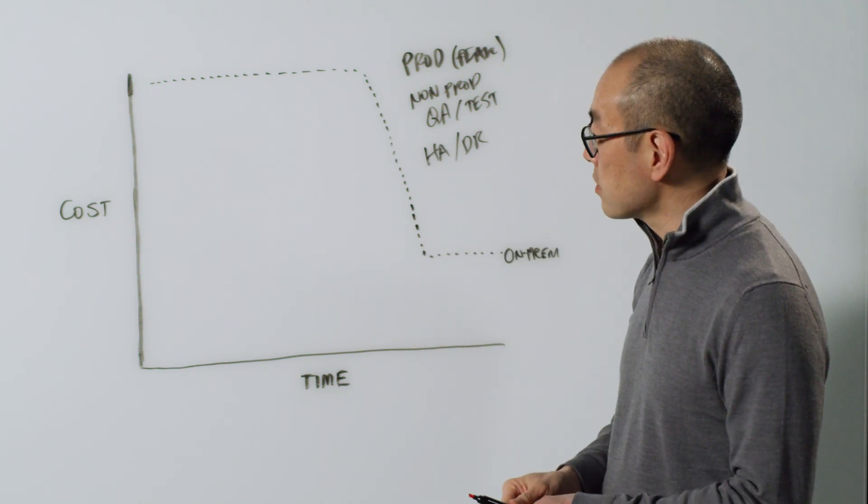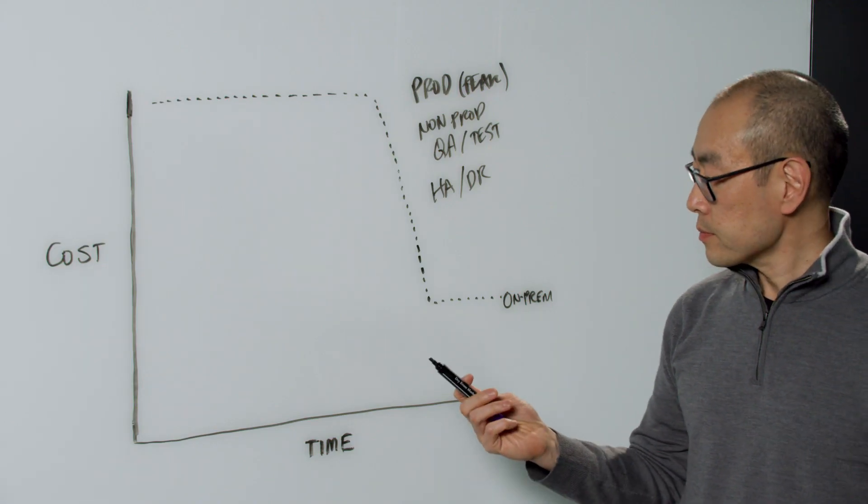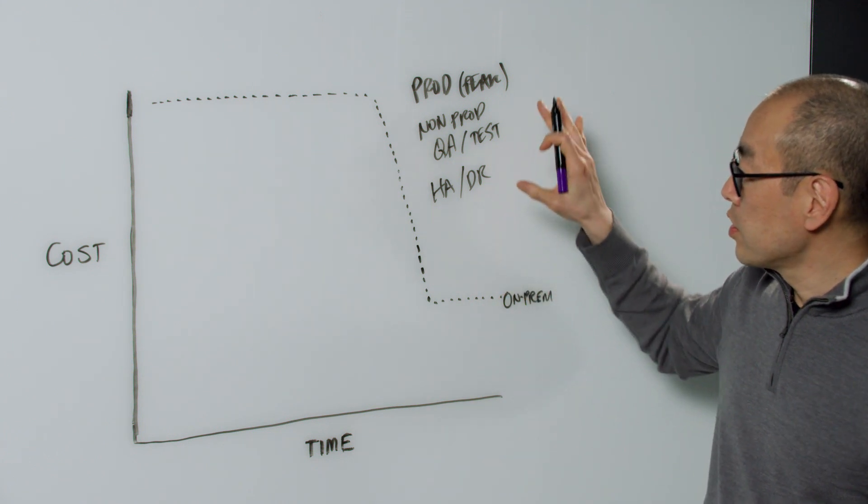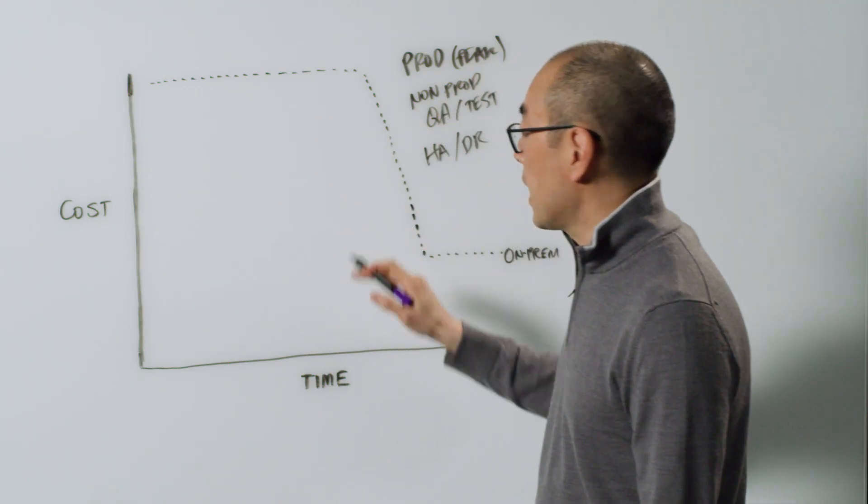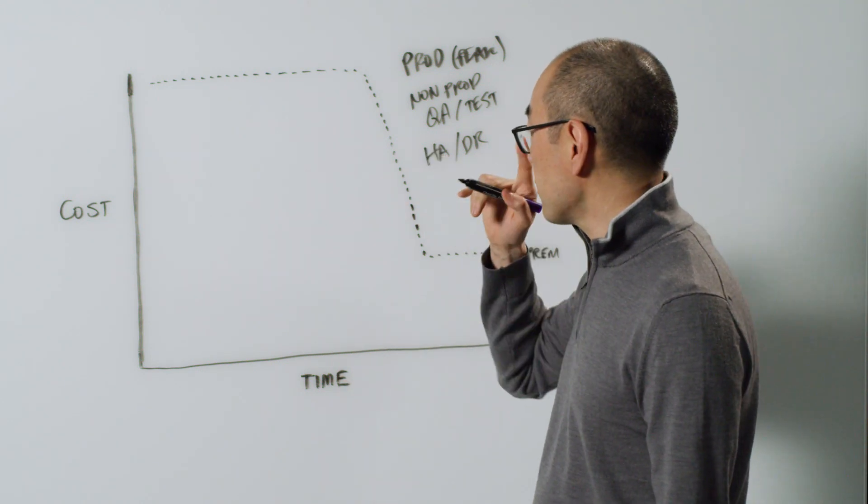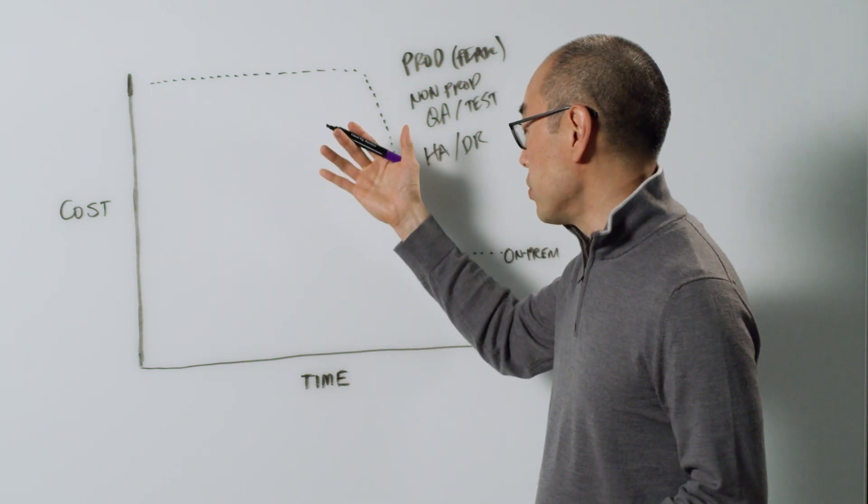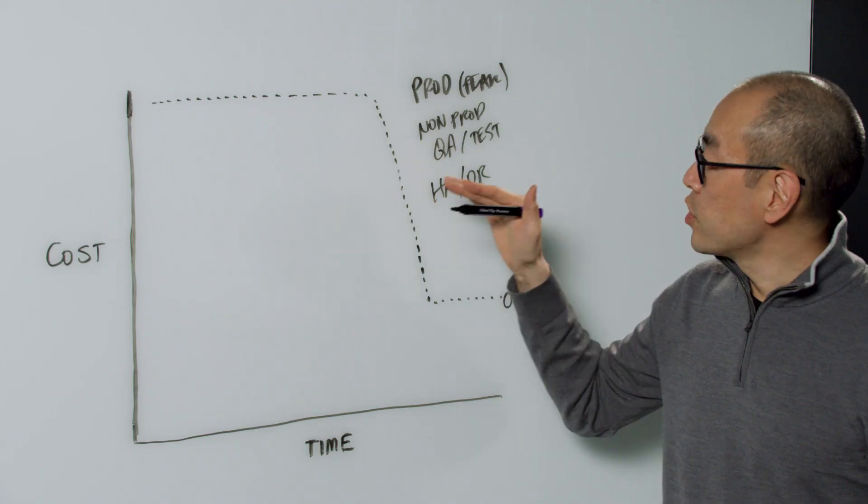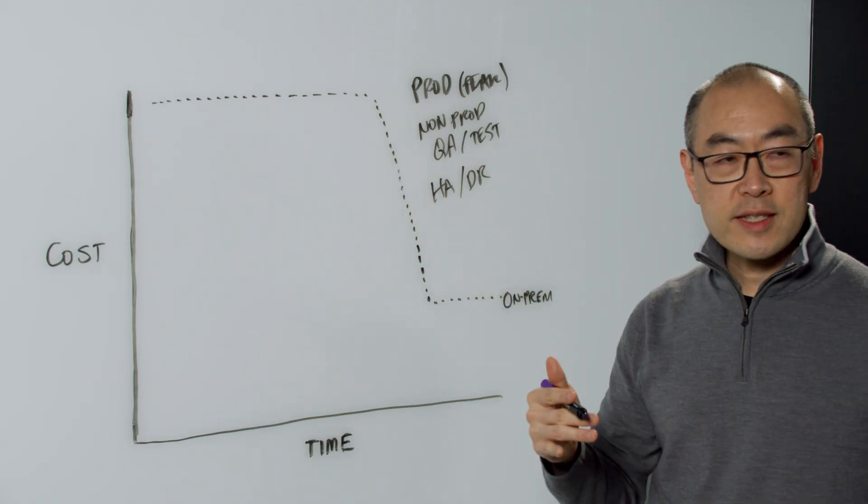Now when you look at a cloud provider, the big differences are you can address all these use cases at a lot lower cost on an ongoing basis. First and foremost, when you decide on your infrastructure, you're probably not going to be provisioning for peak because you know you can scale - you're going to be looking for some middle point.